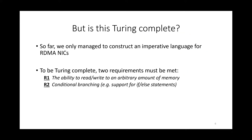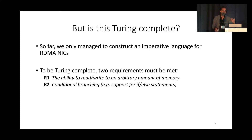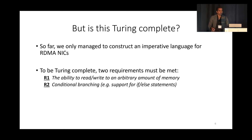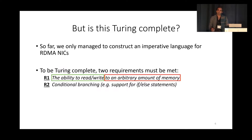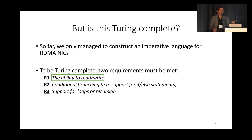The main question is: is this Turing complete? We care about Turing completeness because we want to see if we can use this language to perform arbitrary offloads to RDMA NICs. To be Turing complete, there are multiple requirements. First, there is a requirement to be able to read and write to arbitrary amounts of memory. The second requirement is to have conditional branching. The first part of R1 is already satisfied by RDMA since you can do reads and writes using traditional RDMA verbs. To handle arbitrary amounts of memory, you also need support for loops or recursion. So we now have three requirements: R1 (memory), R2 (conditional branching), and R3 (loops or recursion).